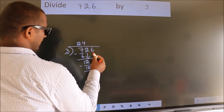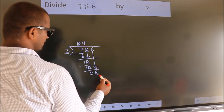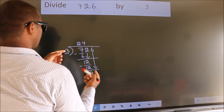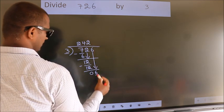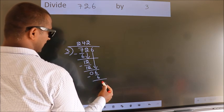After this, bring down the beside number. So 6 down, so 6. When do we get 6? In 3 table, 3 times 2 is 6. Now we subtract. We get 0.